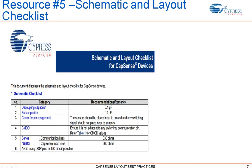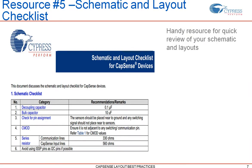The fifth resource is a schematic and layout checklist. If you have your schematic and layout done and are thinking about a quick review to match with our design guidelines, you can refer to the schematic and layout checklist available on our website. This checklist has a summary of all our recommendations for doing a proper Capsense schematic and layout design.